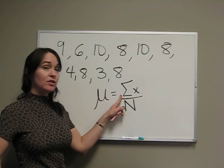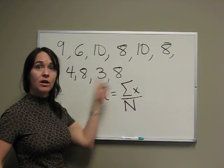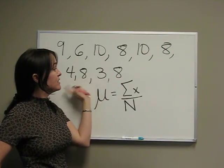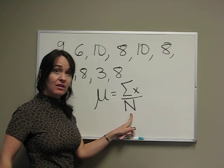Summation of x means we're going to sum up all of our variables - these are all the numbers we're talking about. So we add all these numbers up and then divide by capital N, which is our population size.